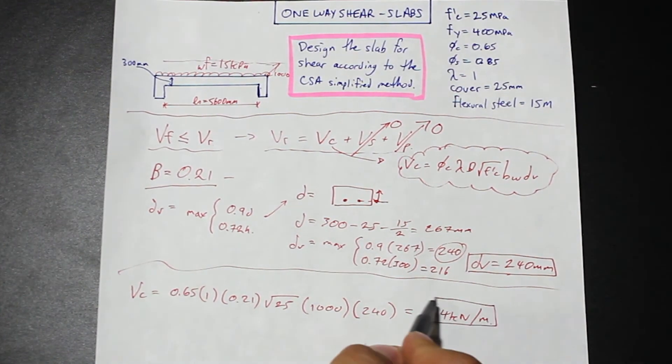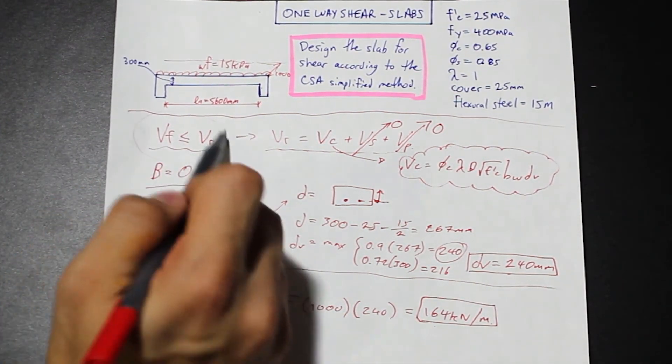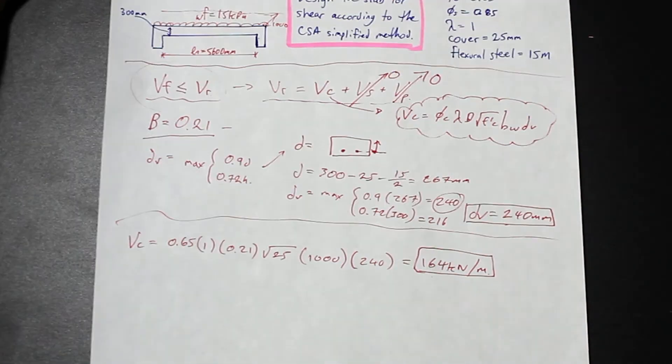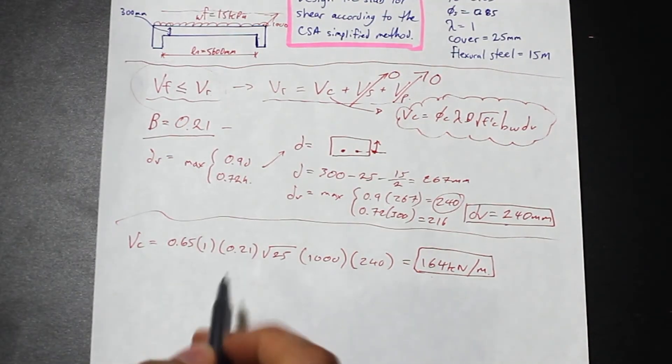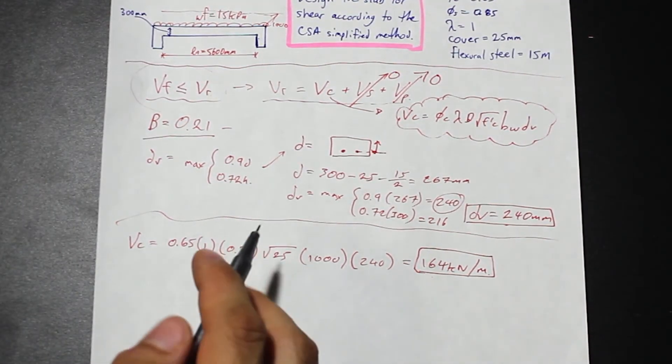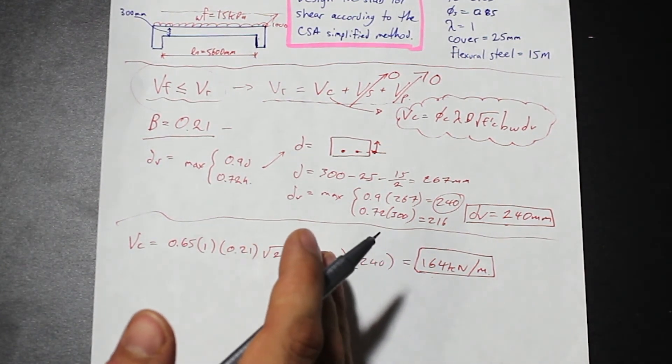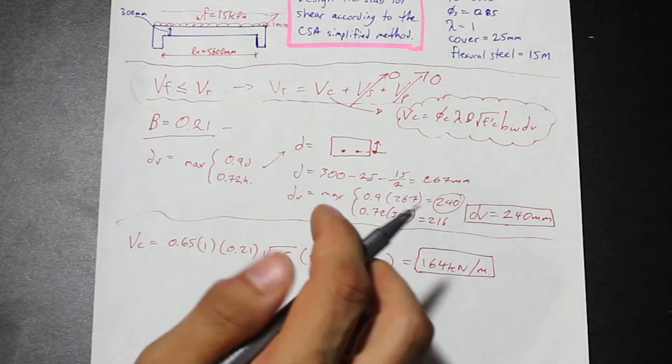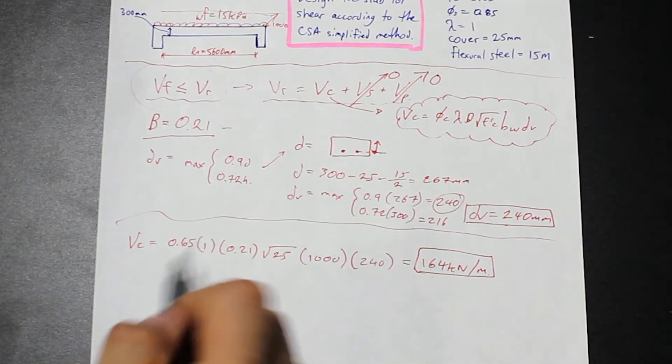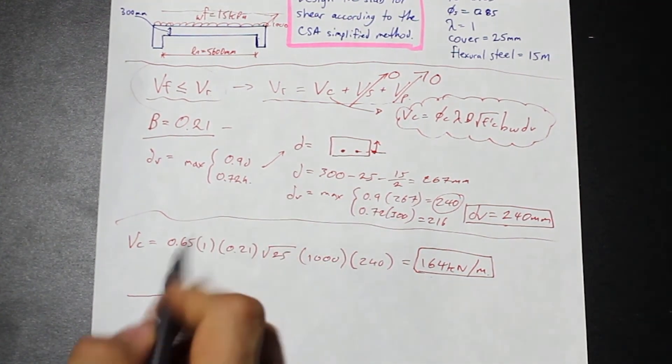We're going to get that our shear resistance of concrete is 164 kilonewton per meter of slab. This is good. This is the value that we need, but we need to verify that VF is less than VC. How do we do that? We need to calculate the shear force diagram. We don't need to calculate any sort of envelope because shear effects in slabs are usually rather small.